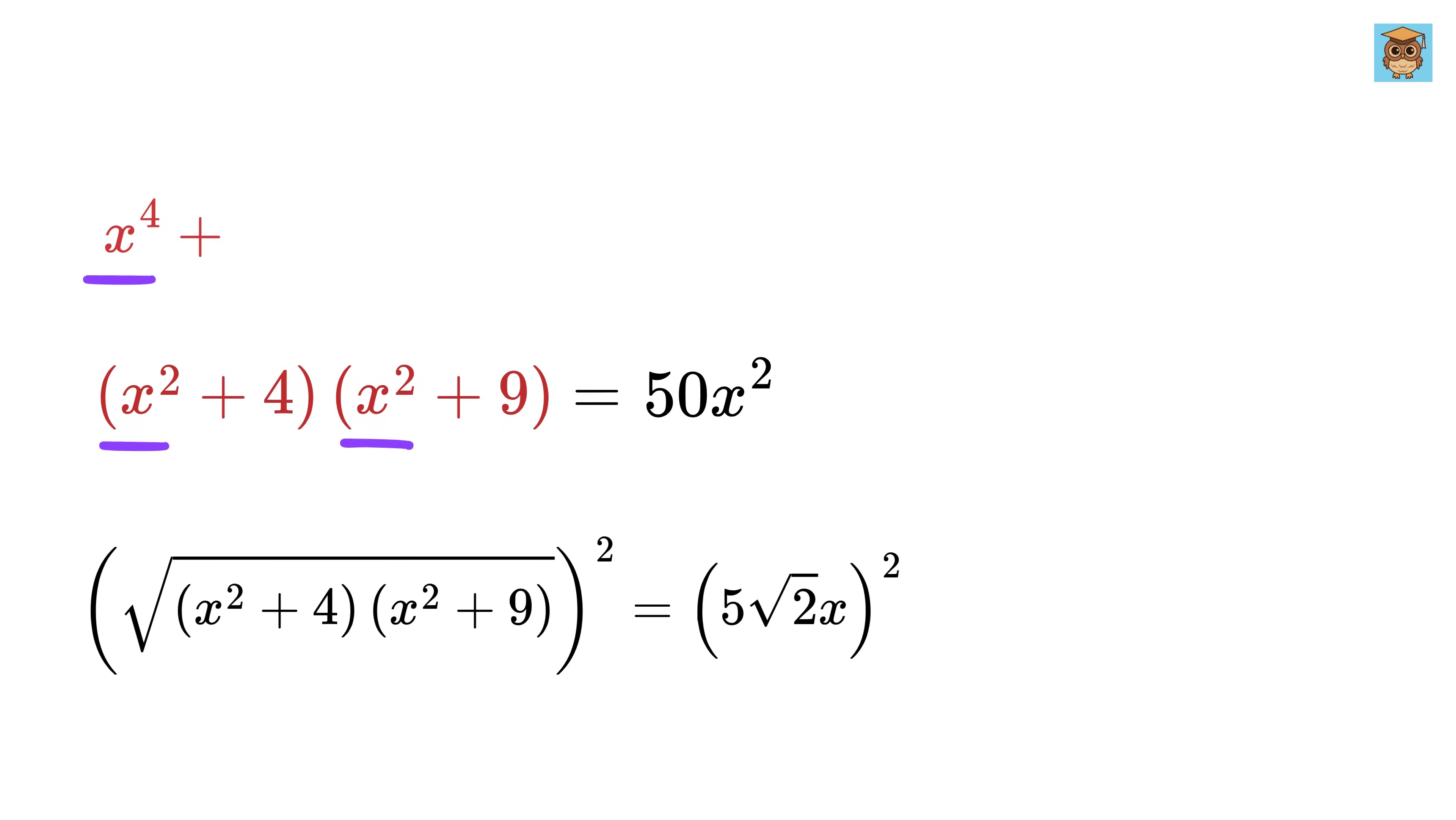Expand this to get x to the 4th power plus 9 x squared plus 4 x squared plus 36, or x to the 4th power plus 13 x squared plus 36 equals 50 x squared.